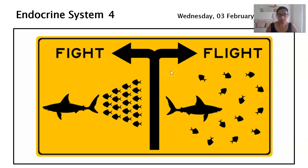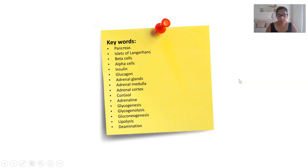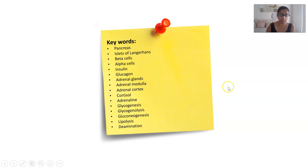Hi everyone, in this video we're going to be looking at the pancreas and the adrenal glands. With this lesson we are going to be focusing on the learning objectives: identifying the endocrine organs, the hormones they produce, their target cells, and the effects they have on those cells. There is a big list of key words associated with this section — a lot are anatomical words you already know, and the others are straightforward and we'll go through them throughout this lesson.